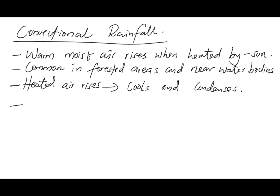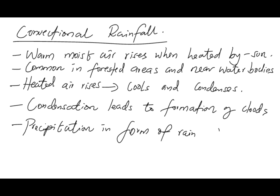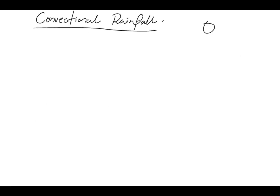The heated air will rise, it will cool, it will condense, and condensation will lead to the formation of clouds which give us this rain. Precipitation occurs in the form of rain falling onto the ground. This happens mostly in very forested areas, where vegetation provides moisture to the atmosphere, and also in areas with large water bodies.